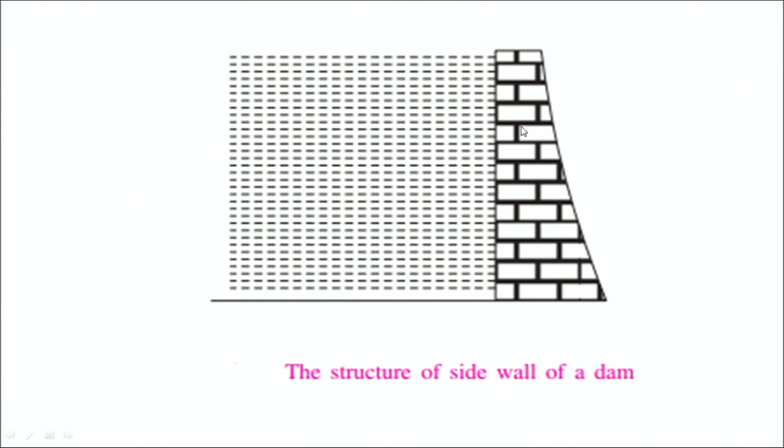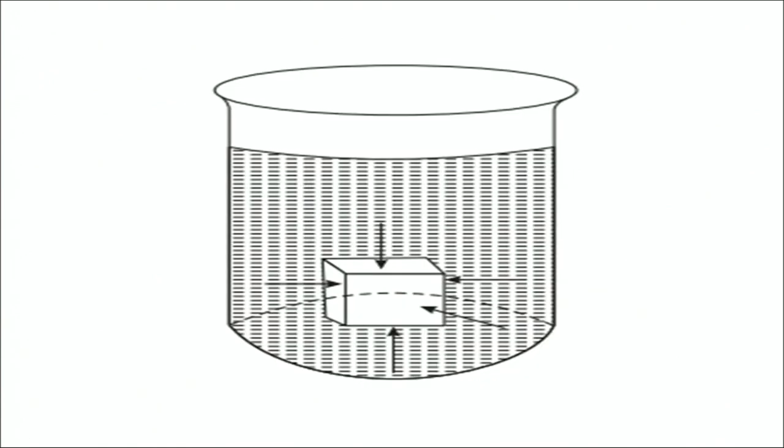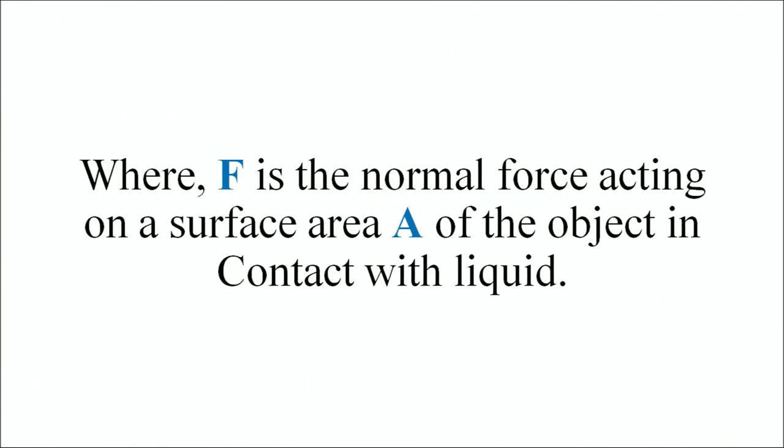Since the height increases, the structure of the dam becomes narrow. In this diagram, we try to explain that when a jar is taken, which is filled with water till a certain height and a cube having a symmetric surface is dipped into that water, the water applies normal thrust on each surface of that cube, where F is the normal force and the surface area is given by the capital A of the object which is in contact with the liquid.